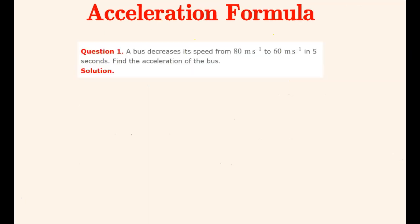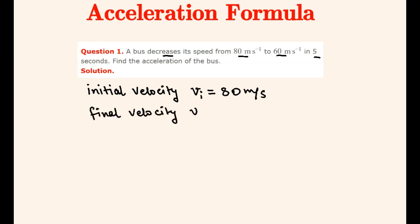We will now look at a simple example. A bus decreases its speed from 80 meters per second to 60 meters per second in 5 seconds. Find the acceleration of the bus. Here it is given that initial velocity vi equals 80 m/s, final velocity vf equals 60 m/s, and time taken t equals 5 seconds.